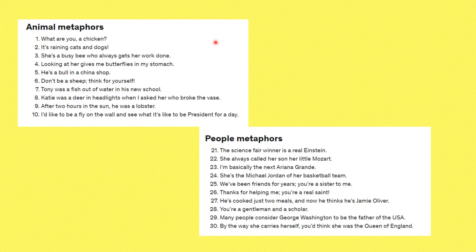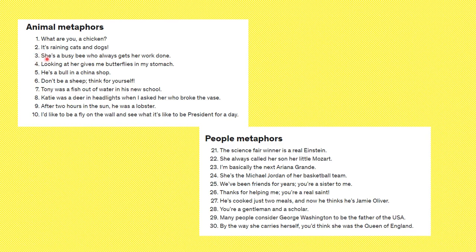Let's look at another type of figurative language called metaphors. Remember, a simile compares using the word 'like' or 'as,' but a metaphor says something is something else. Let's look at this first metaphor: 'What are you, a chicken?' So it's comparing or saying that you are a chicken — and you know you're not a chicken. Next: 'She's a busy bee who always gets her work done.' They're comparing this person to a busy bee, saying that she is a busy bee. In number one, they're saying this person is a chicken.